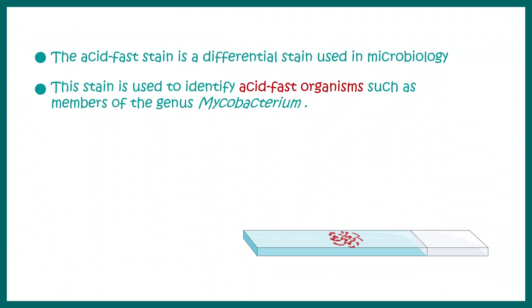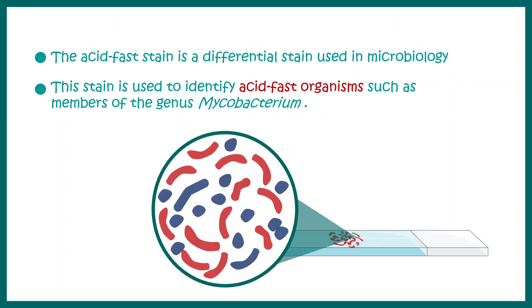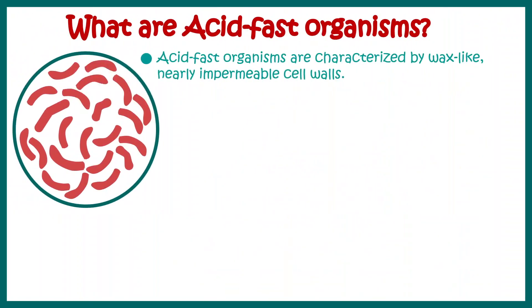Acid-fast staining is a differential staining method used in microbiology. The stain is used to identify acid-fast organisms such as those in the genus Mycobacterium. In this staining, the acid-fast bacteria would appear reddish, whereas the non-acid-fast bacteria would appear blue. By the end of this video, it will be totally clear what is the basis of this differential coloring.